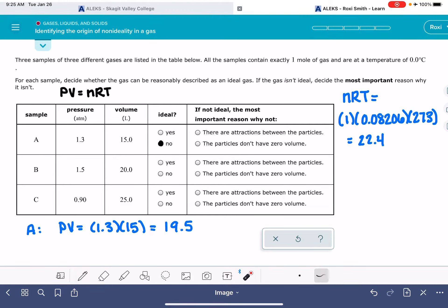Before we answer this question over here, let's just go through and do that for gas B and gas C. For gas B, pressure times volume is 1.5 times 20, which is 30. And 30 is also not equal to 22.4, so this is also not an ideal gas.